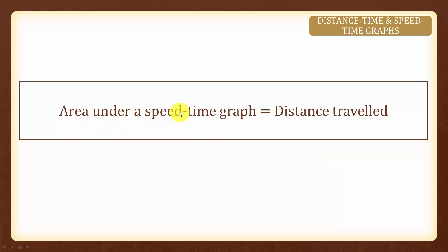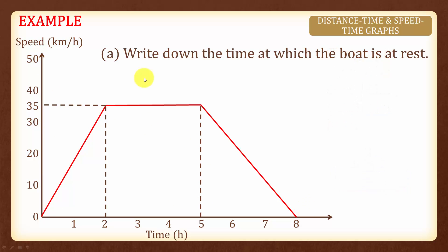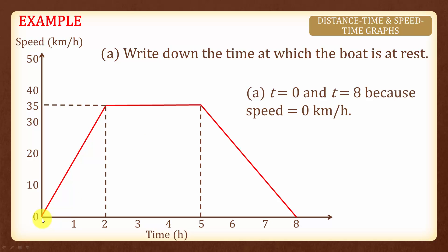Therefore, in conclusion, the area under the speed time graph is equal to the distance travelled. Let us look at an example here. We have a speed time graph of a boat. Write down the time at which the boat is at rest. The boat is at rest when the speed is 0. And hence, the time is 0 hours and 8 hours.